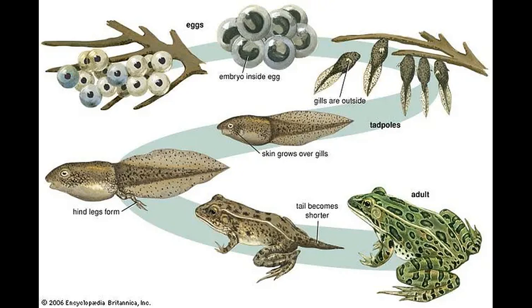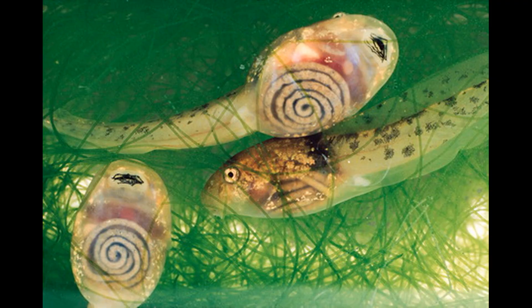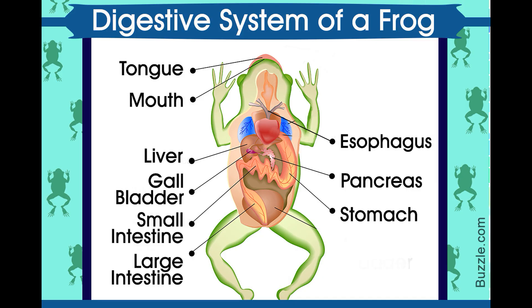Metamorphosis in amphibians follows a three-step pattern: death and resorption of tissues used only by the tadpole, like the tail and external gills; de novo growth and differentiation of tissues necessary only for the adult, like the limbs; and finally, the remodeling of tissues for new functions. One example of this is the intestine in tadpoles — initially a long, coiled tube — which shortens by 75% and differentiates into the stomach and large intestine in the juvenile.